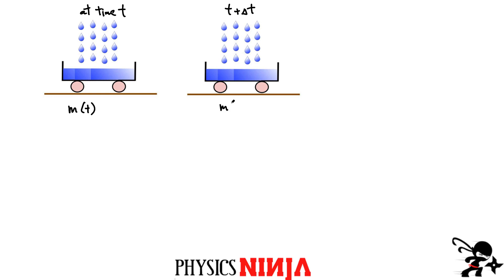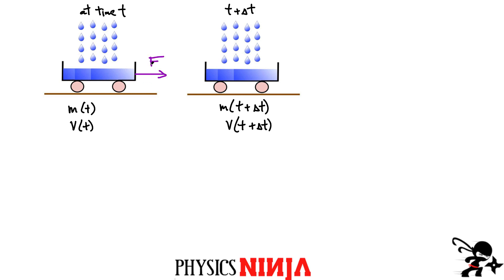The mass at the later time t plus delta t includes the cart and all the rain that has fallen inside, and this mass is increasing as a function of time. We also define the velocity at time t and the velocity at t plus delta t, which is changing. To make this more general, we can add an applied force — imagine someone pulling on the cart. We'll assume that force is constant, and at the end you can always set the force to zero.